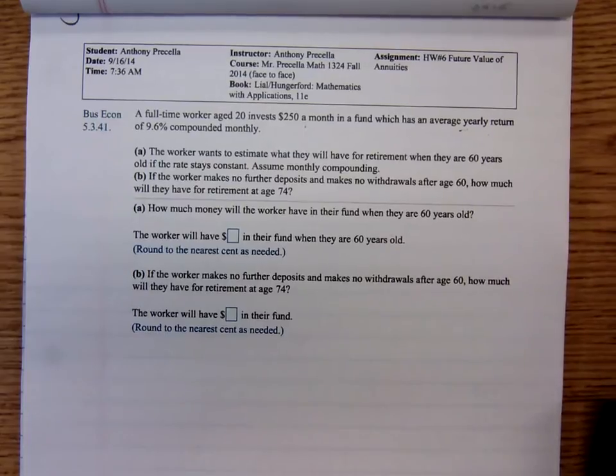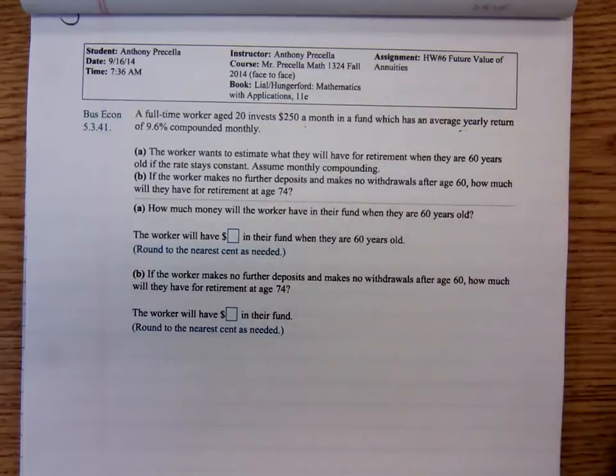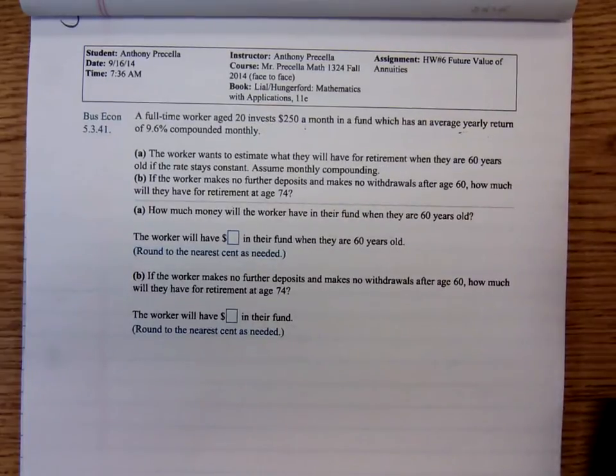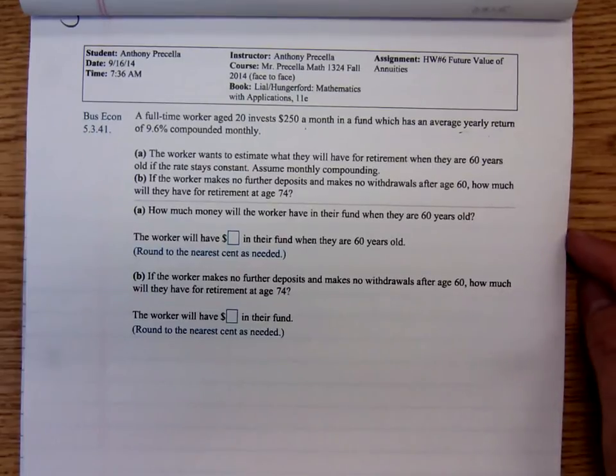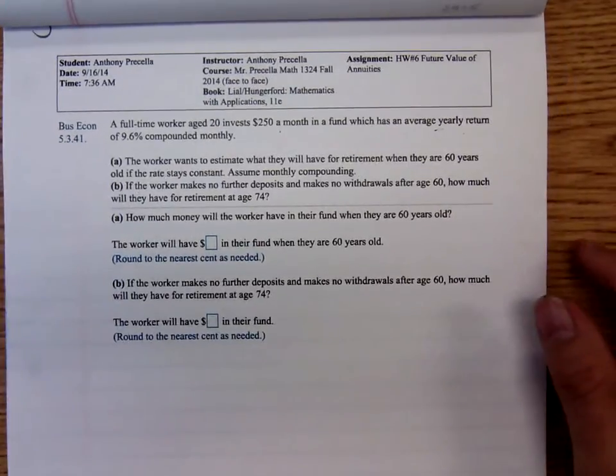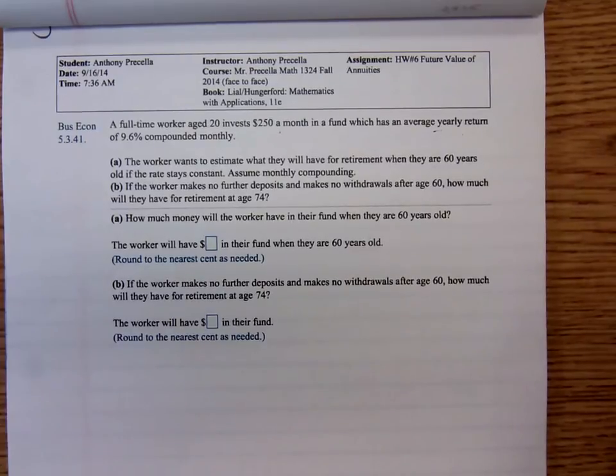The interest is compounded monthly. Remember, the payment period and the compounding period have to be the same in order for our annuity formulas to work, and they're not saying anything to indicate whether we're looking at an ordinary annuity or annuity due.